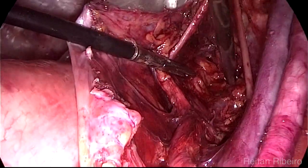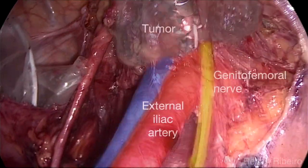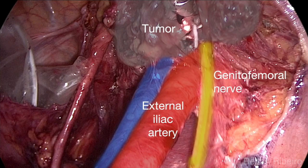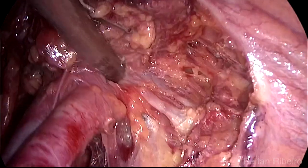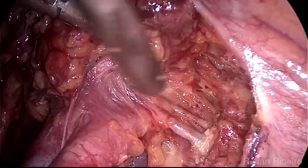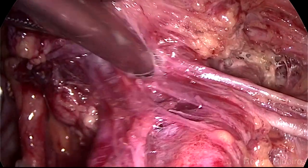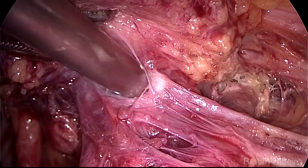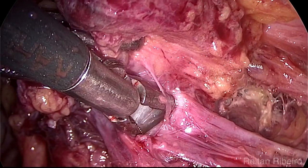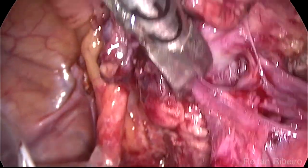The remaining tumor on the distal side of the external iliac vessels is addressed now. The right genitofemoral nerve is compromised by the lesion and its distal portion was resected en bloc. The deep circumflex iliac artery and vein are well observed. As the tumor is firmly adhered to the external iliac vein surface, it is paramount to perform a very careful dissection in this plane.